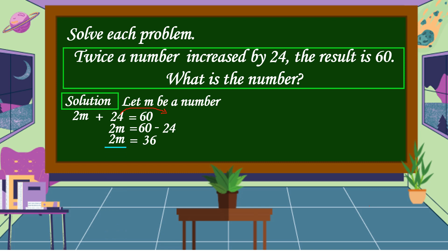To get the value of M, we're going to divide both sides of the equation by 2. 2M divided by 2 is cancelled, and the remaining item is M. 36 divided by 2 is equal to 18. This is our number.